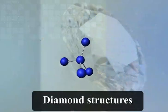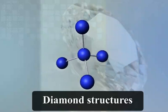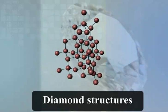In diamond, each carbon atom is bonded to four other carbon atoms, forming a rigid 3D structure.